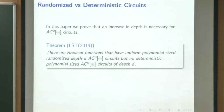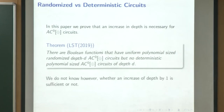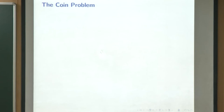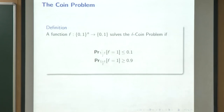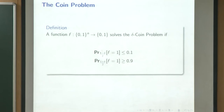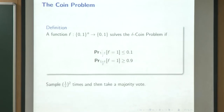I will go through the first result via the coin problem, which Aditya already discussed. The coin problem asks us to distinguish between two slightly biased probability distributions: around (1 minus delta)/2 and (1 plus delta)/2. We want a function f that outputs 1 with high probability on one distribution and 0 with high probability on the other. The majority function solves the coin problem.